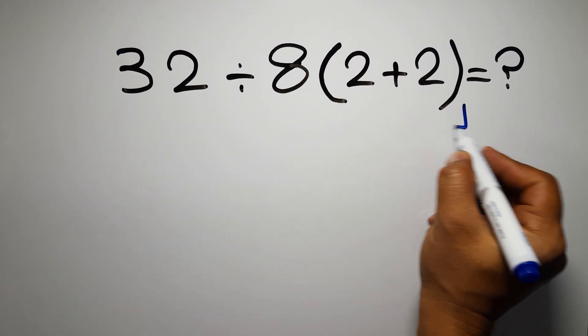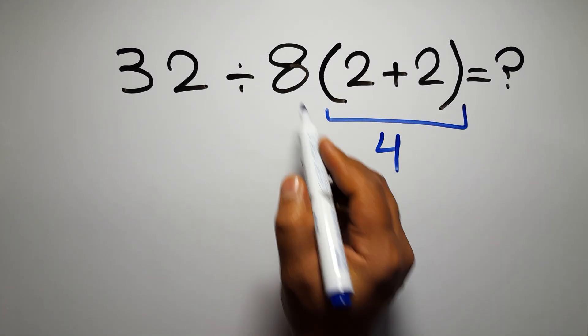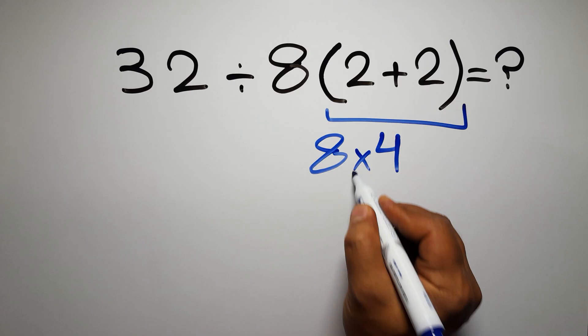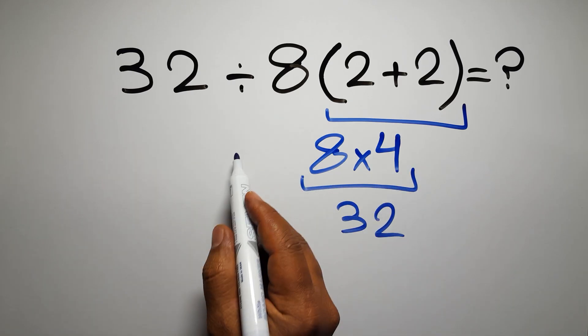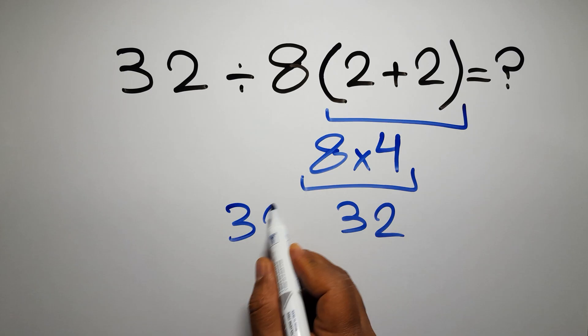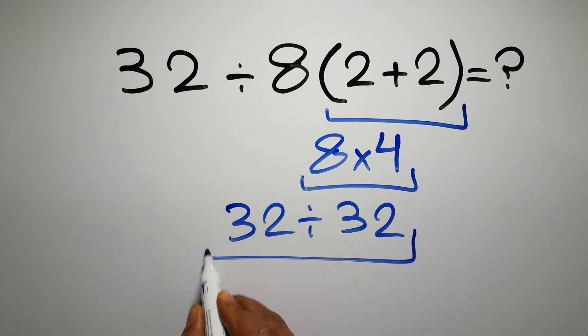2 plus 2 gives us 4, so 8 times 4 gives us 32, and 32 divided by 32 is just 1, but this answer is not correct.